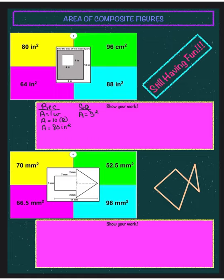Now I need to find the area of the square inside the rectangle. The side of the square is 4 inches. When squaring a number, you're multiplying it by itself — not by 2. So it's 4 times 4, which is 4 to the power of 2, and 4 times 4 is 16. So the area of the square is 16 inches squared.